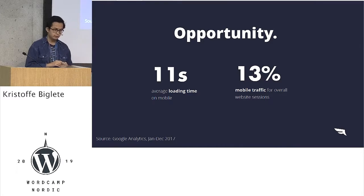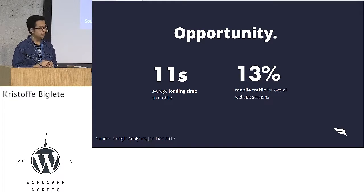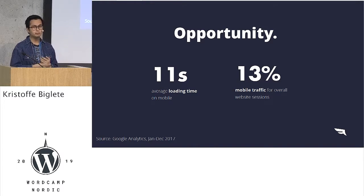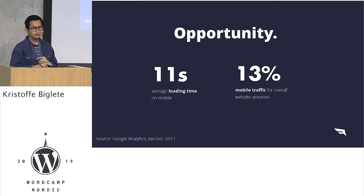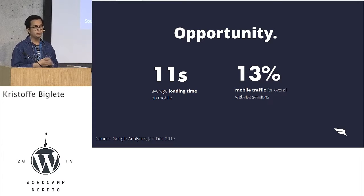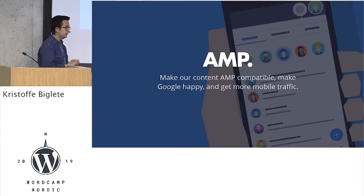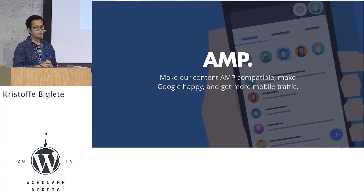One of the opportunities that we saw was that in 2017, our mobile website — our marketing mobile website — was not optimized at all. We had it responsive and all that. It was working, but it was extremely slow, and we're not pushing any paid or social content to it. We were just trying to get some organic from SEO, but it represented only 13% of our overall website sessions. So one of the things that we wanted to work with is AMP — Accelerated Mobile Pages — which is a framework made by Google.